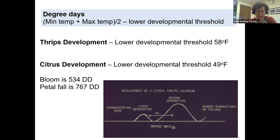Why is this important? There are about seven generations of thrips growing on citrus. The very first generation is primarily on the leaves and twigs in early spring, and sometimes that matches up with petal fall and susceptible fruit — and sometimes it doesn't, because of temperature. If spring temperatures tend to be cool, the citrus will develop but the thrips might not — they might be waiting for warmer temperatures. So sometimes we see thrips and petal fall occur at exactly the same time, and sometimes at different times, meaning you may or may not need to spray directly at petal fall.